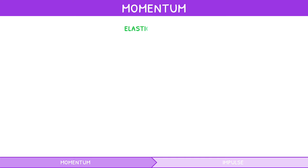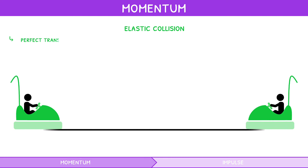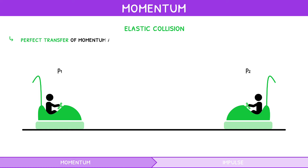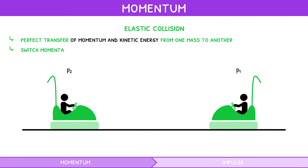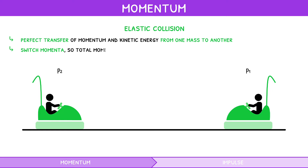During an elastic collision, there is a perfect transfer of momentum and kinetic energy from one mass to another — i.e. they switch momenta — so total momentum is conserved.